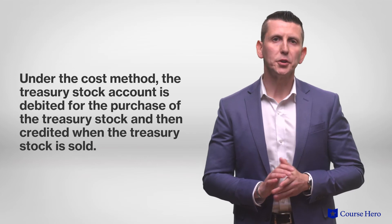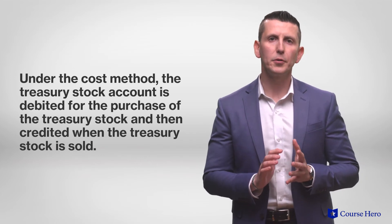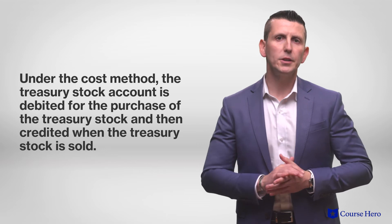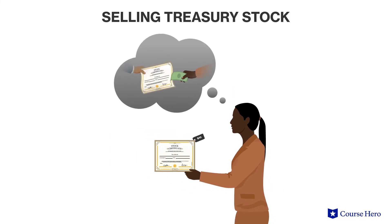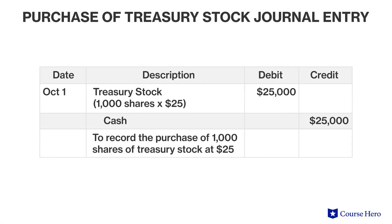Under the cost method, the treasury stock account is debited for the purchase of the treasury stock and then credited when the treasury stock is sold. When selling treasury stock, the credit is always for the same amount as the purchase price. For example, company ABC has 10,000 shares of $10 par common stock issued and outstanding. On October 1st, the corporation purchases 1,000 shares of its own common stock at $25 per share. The journal entry would require a $25,000 debit to treasury stock and a $25,000 credit to cash.